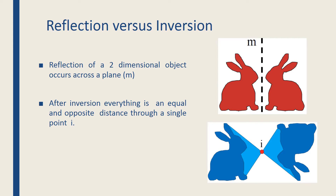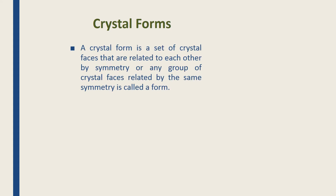This figure shows the reflection and the inversion plane. The reflection of a two-dimensional object happens across the plane M, but after inversion, everything is at an equal opposite distance through a single point I. This is the topic of our lecture today: crystal form.